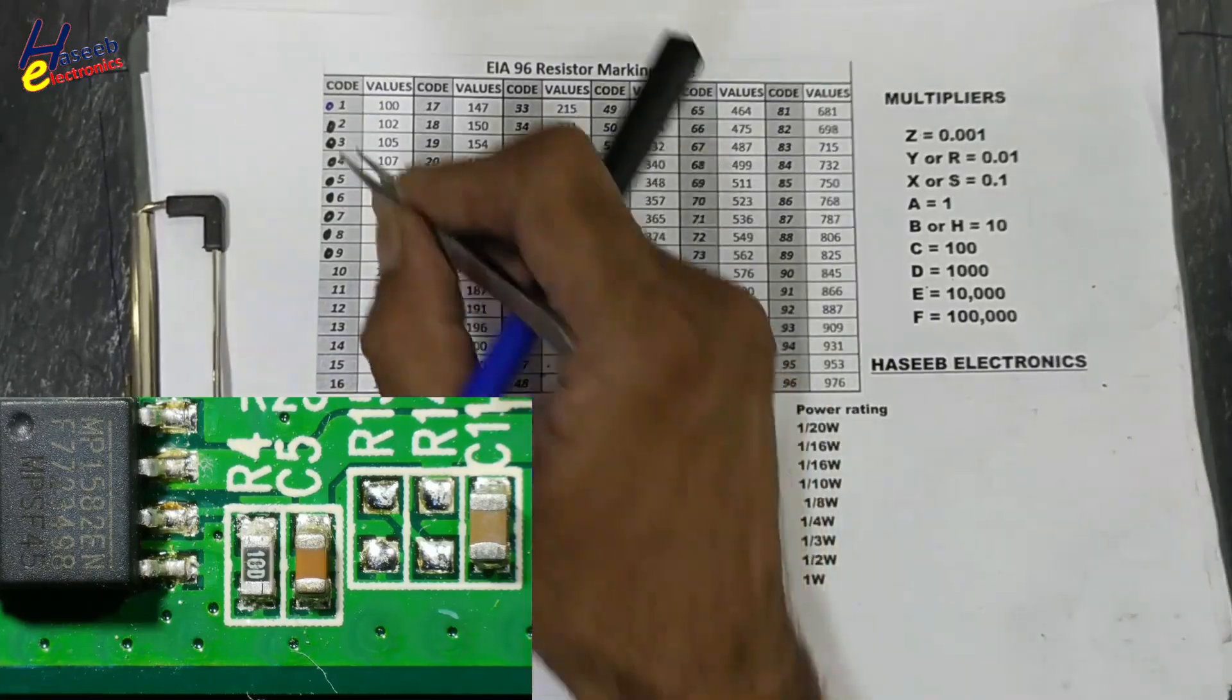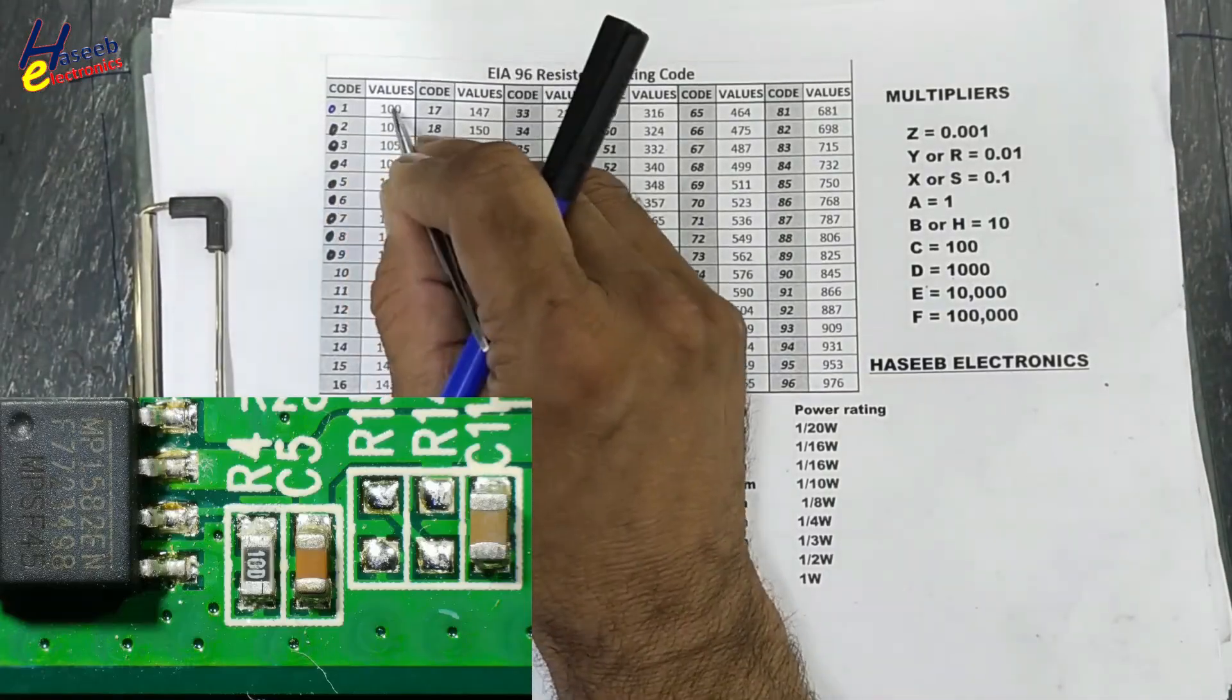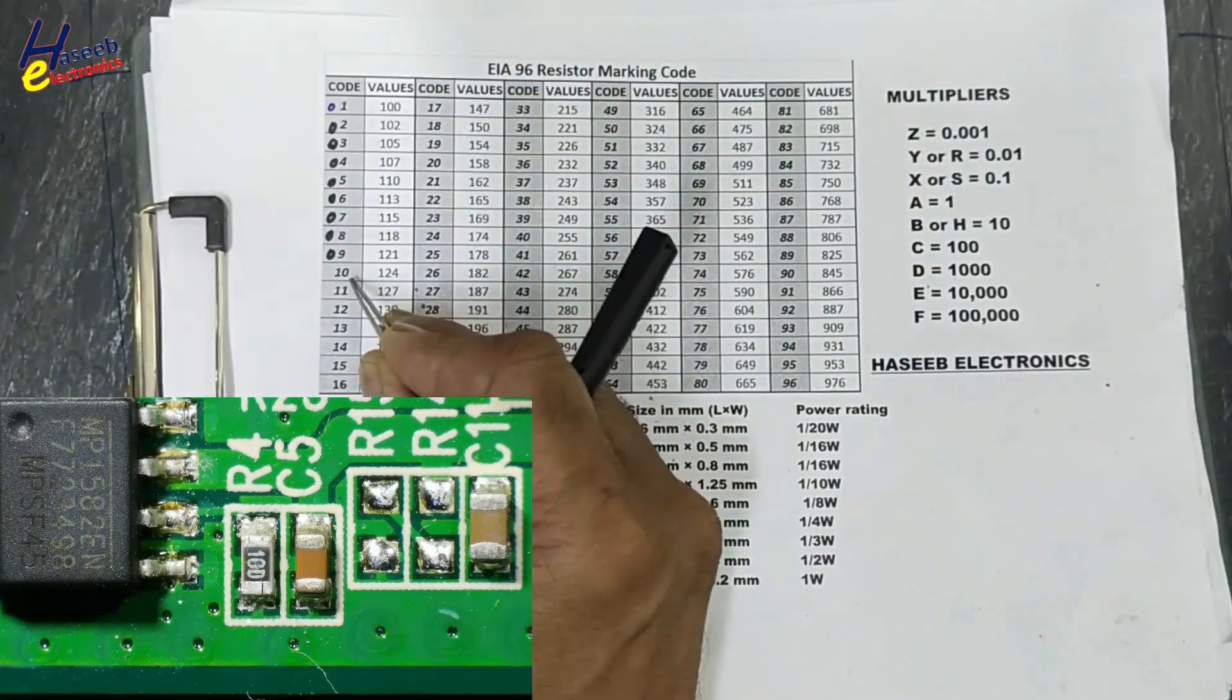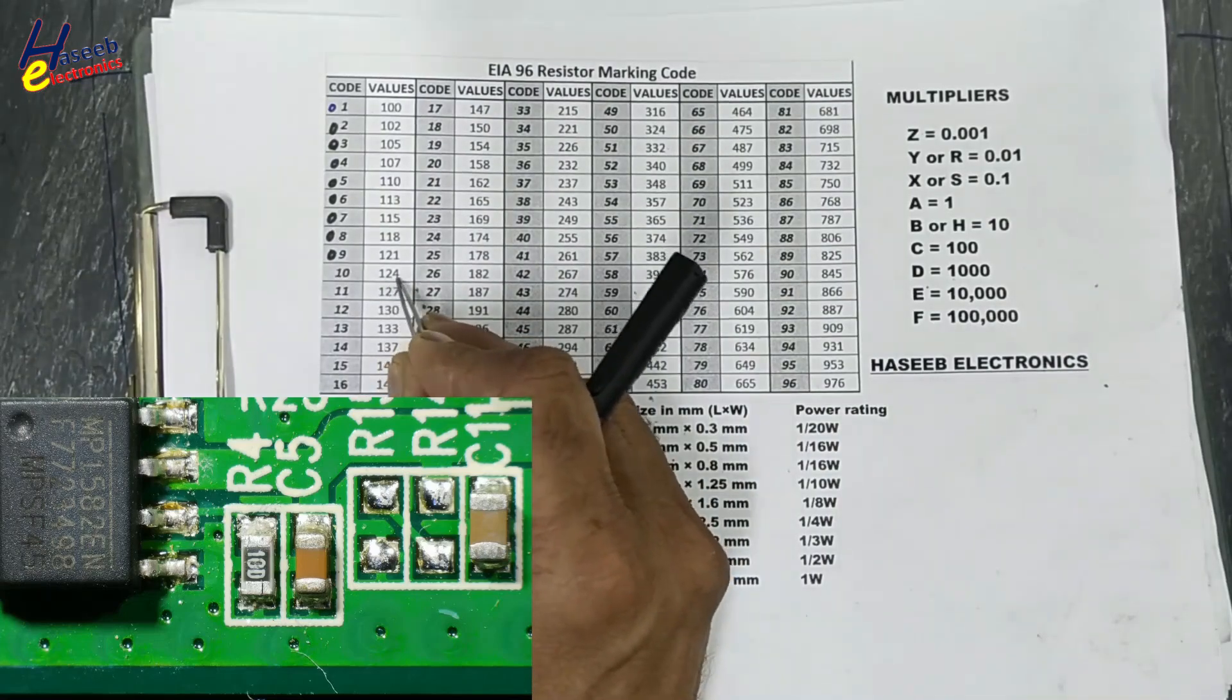Basically that is a mistake while reading the code. I said 10 is equal to 100. Indeed, 10 is equal to 124.